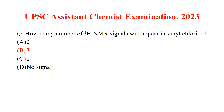How many H1 NMR signals will appear in vinyl chloride? The answer to this question is option B: three signals.